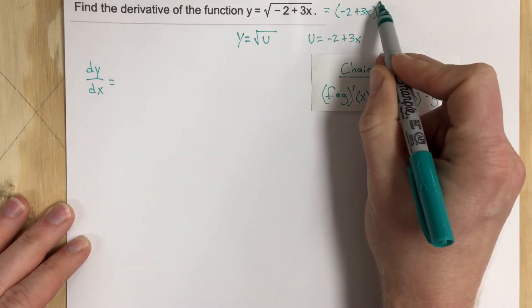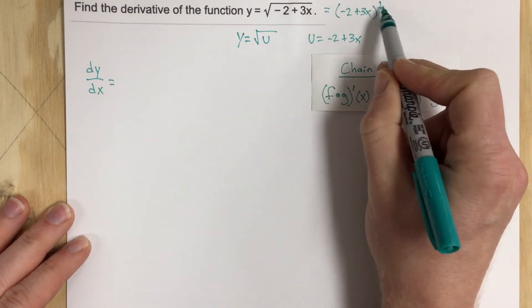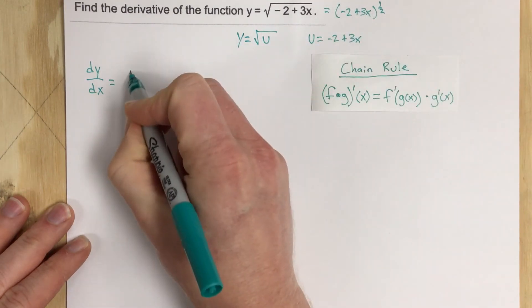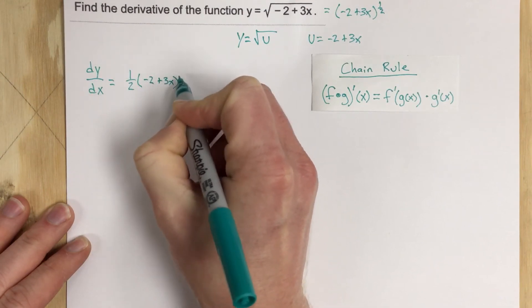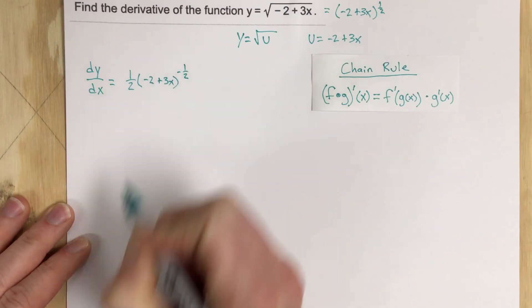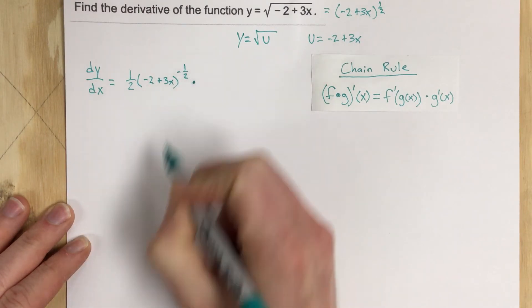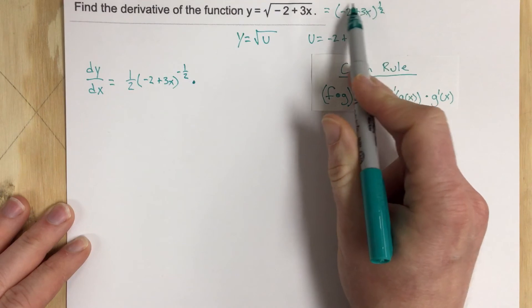So this is going to be bring the 1 half to the front. This is the derivative of the outside and we end up with 1 half negative 2 plus 3x to the negative half. We're going to multiply that times, so that's the derivative of the outside that we just did.